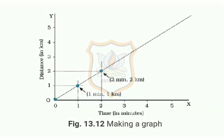To mark this set of values, look for the point representing 1 minute on the X-axis and draw a line parallel to the Y-axis at this point. Then draw a line parallel to the X-axis from the point corresponding to 1 kilometer on the Y-axis. The point where these two lines intersect represents this set of values on the graph.